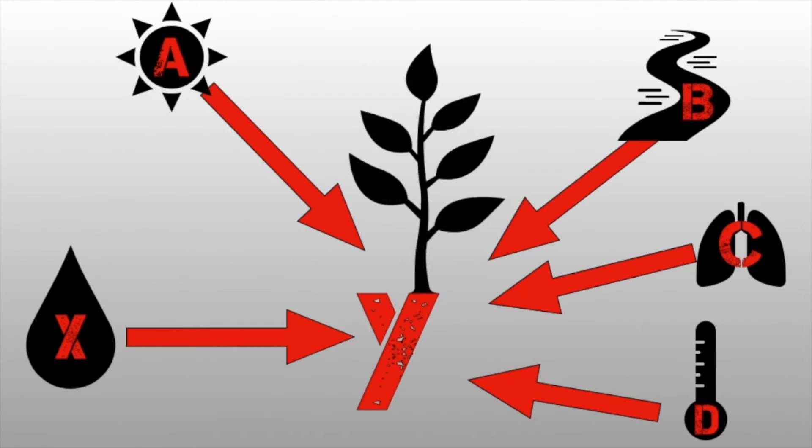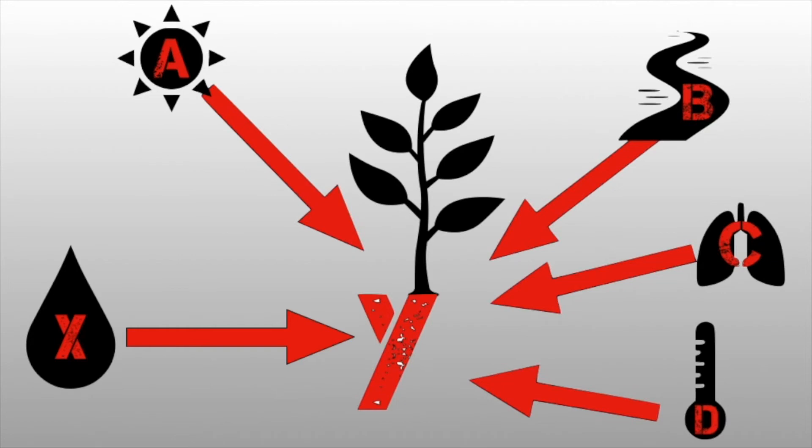So if we see a plant growing at a certain rate, how are we to know whether it's chemical x, or it's the sunlight, or it's something else, b, c, or d? So that's why when you design your experiment, you need to do it in a way which controls all of these unknown or these extra variables.